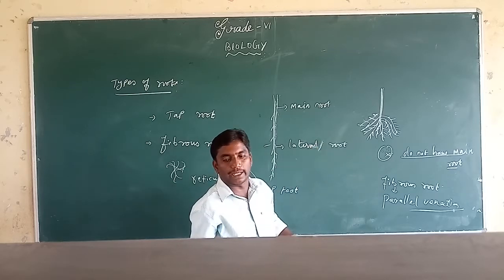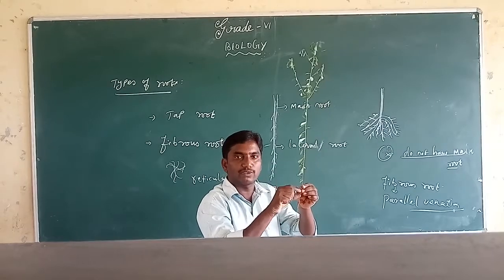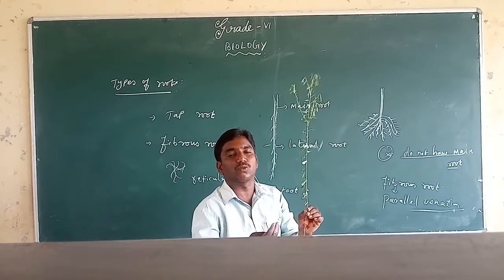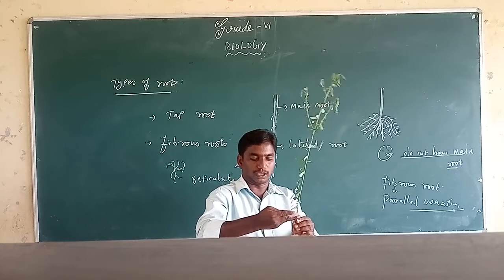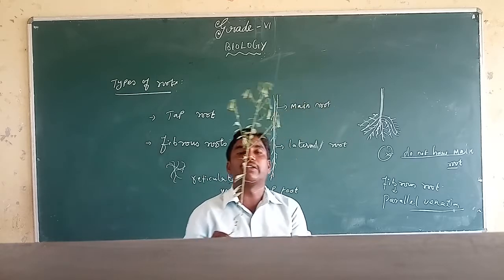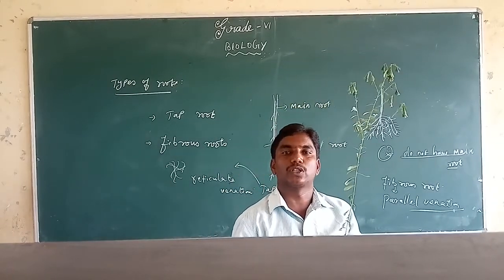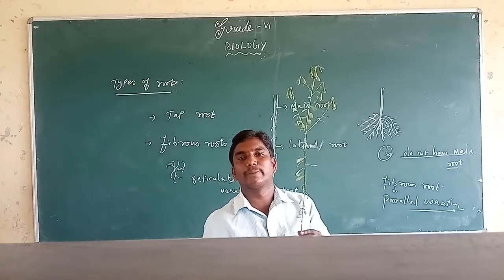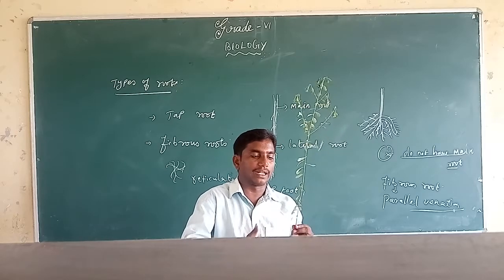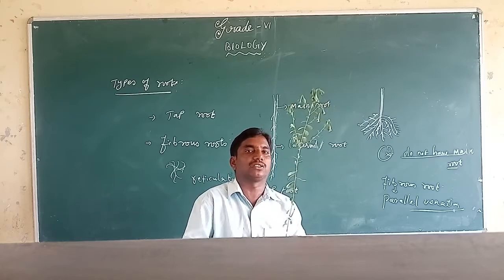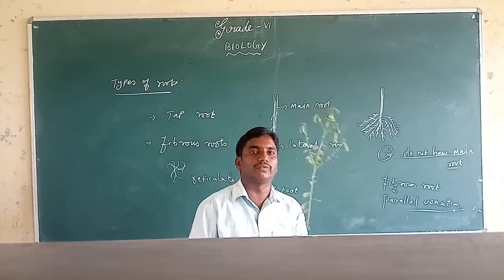The stem conducts water and minerals. What is the stem carrying? Water and minerals — the stem conducts these to the leaves and other parts of the plant. The root absorbs water and minerals from the soil, and the stem conducts them to the leaves and all other parts of the plant.